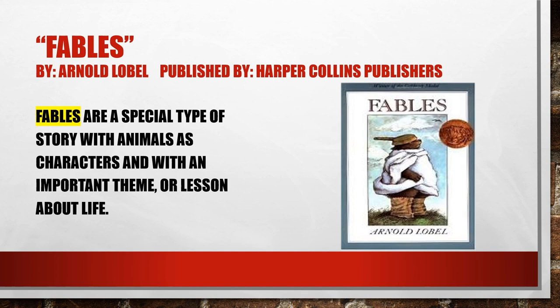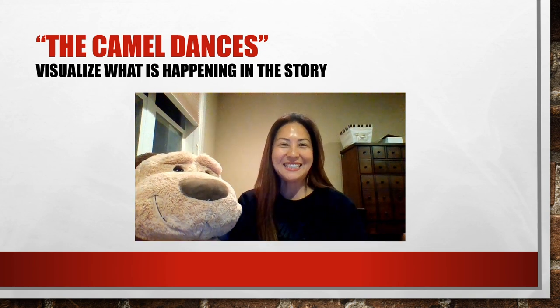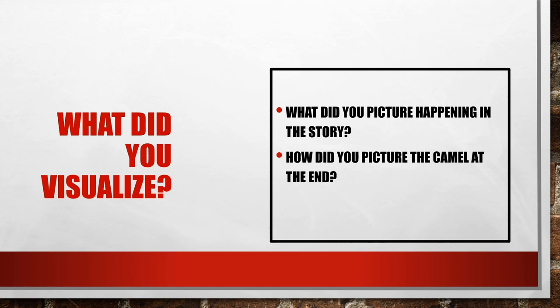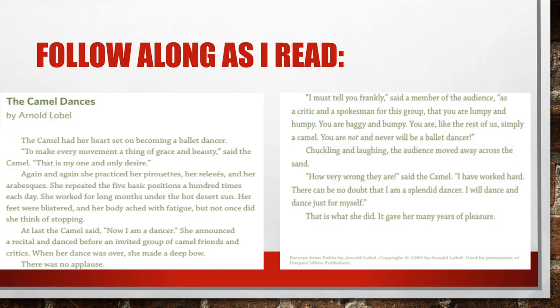I wanted to go over the questions I asked at the end of the first reading: What did you visualize? What did you picture happening in the story? And how did you picture the camel at the end? The first read was just to understand the story. You can pause the video to think about that. After this we're moving on to the second reading — the focus will be on what themes you notice, what lessons the author is trying to get across. Please follow along as I read 'The Camel Dances.'